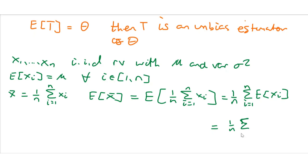That's equal to 1 over n times, so that's equal to mu. That's just mu added to itself n times, so that's equal to mu. These two n's cancel each other, and that's equal to mu.